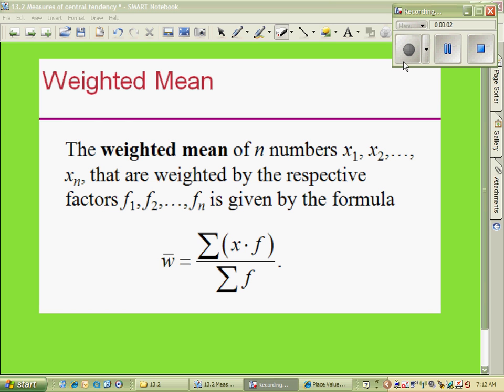The weighted mean is going to be your GPA. It says the weighted mean of n numbers x₁, x₂, and so forth, all the way to xₙ, are weighted by the respective factors, and that's your f. So each variable is going to have a different factor or weight, and then we divide by the total weight. Let's take a look at an example of that.